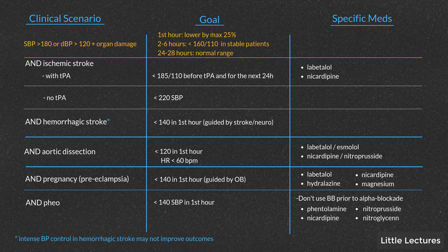Acute aortic dissection — ripping chest pain radiating into the back — gets worse with hypertension. High blood pressure causes worse intimal tearing and more hemorrhage into the vessel. You want to drop that blood pressure very aggressively: less than 120 systolic in the first 20 to 40 minutes, or at least less than 140 in the first hour. Both ACC and AHA recommend IV labetalol for thoracic aortic dissection, providing beta blockade as well.